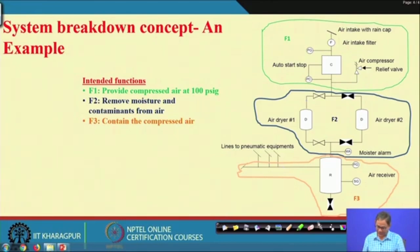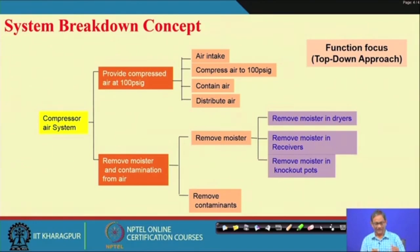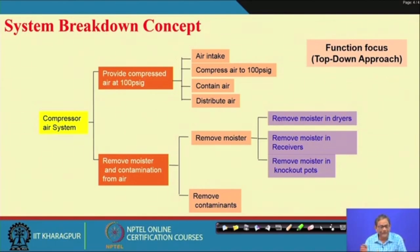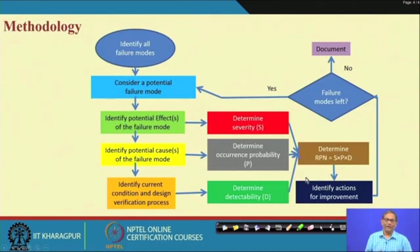So, provide compressed air and remove moisture — contain compressed air. We have broken down into subsystem level. Providing compressed air requires: compress it, then contain and distribute; removal of moisture is another function — remove moisture and remove contaminants. Accordingly, you see the differences taking place. When you go for FME analysis, you may start with, say, distribute air — during distribution, what are the different ways this will fail? That will be the failure mode.